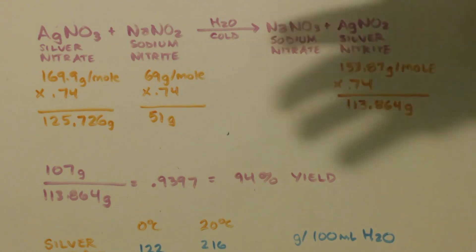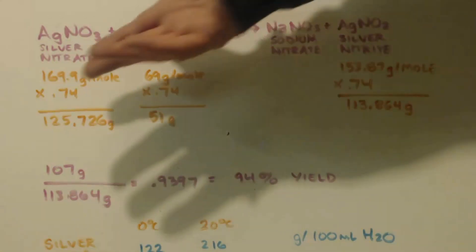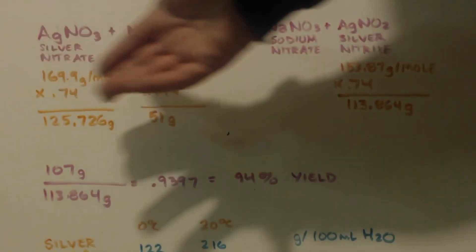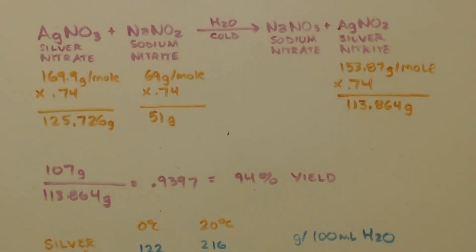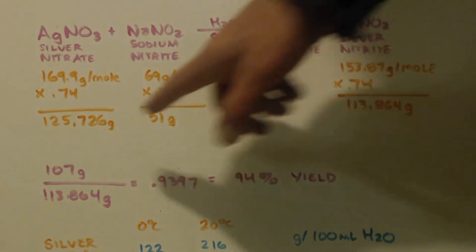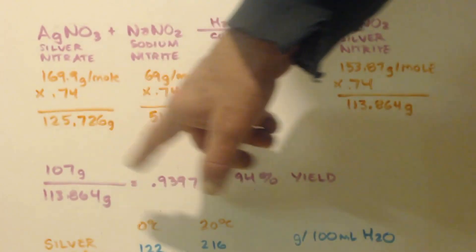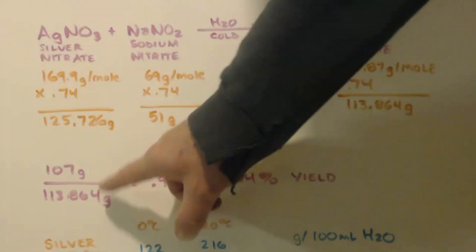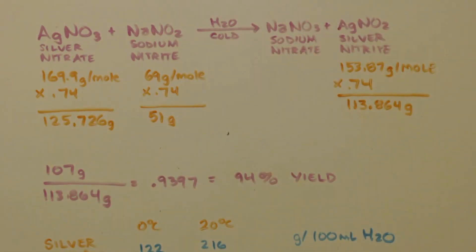Here's the molar masses. I went by how much silver nitrate I had, which was 74% of a mole. So I took everything by, multiplied everything by 0.74 to get these grams, that's how much silver nitrate, that's how much sodium nitrite. And this is how much my theoretical yield of silver nitrite should be. Almost 114 grams. Now I only got 107, so I divided to get the yield, which is a 94% yield.